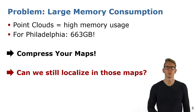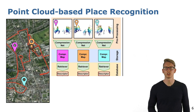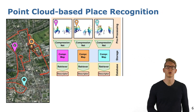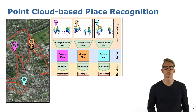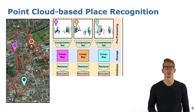To this end, we propose a place recognition approach which works directly on a compressed point cloud representation. The map representation consists of local point clouds around some key poses. As a pre-processing step, we compress the point clouds using a compression network. The compressed representation can then be used for efficient storage, transmission, or as input to a retriever network for place recognition.